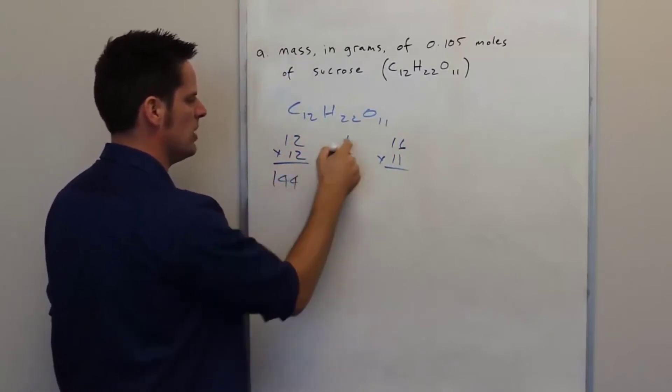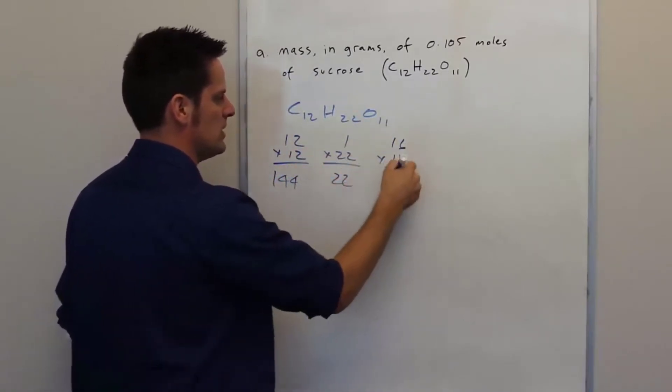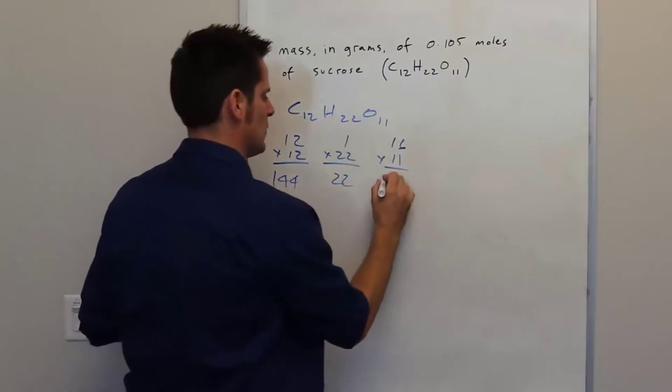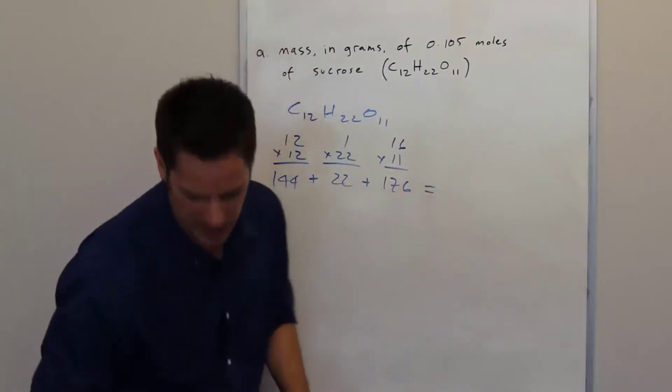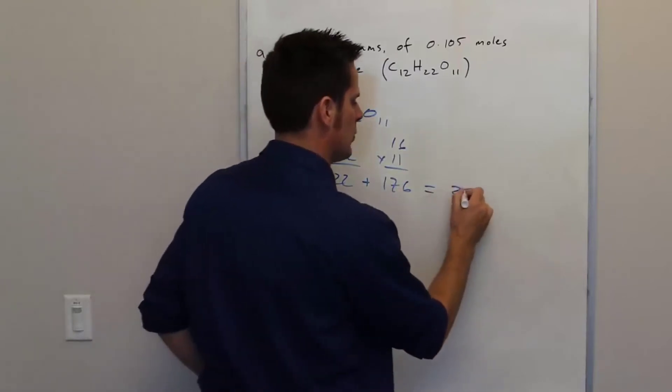12 times 12 is 144, 1 times 22 is 22, 16 times 11 is 176. If I add all of these guys up, I end up getting a total molecular weight of 342.